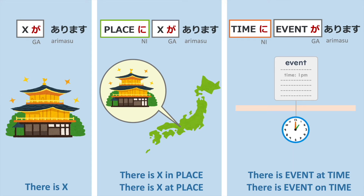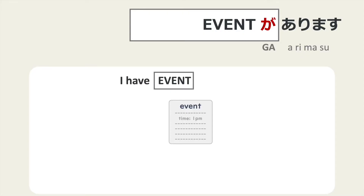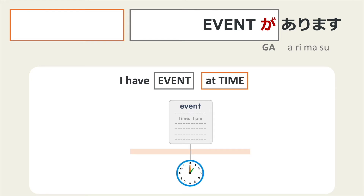Time に イベントが あります。 Remember, あります is used to express the existence of things, including intangibles like events, ideas, and questions. So when there is an event, we say イベントが あります。 To express what time the event occurs, we say タイムに イベントが あります。 This is often translated as 'I have the event at this time.'